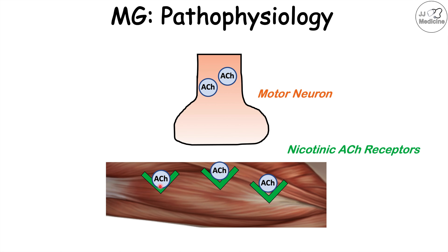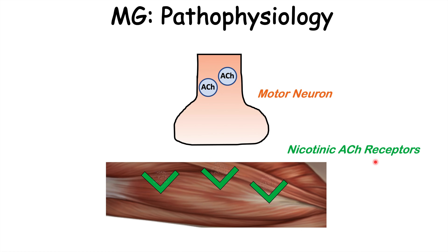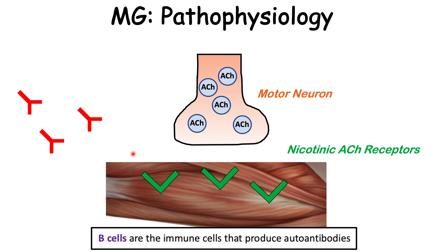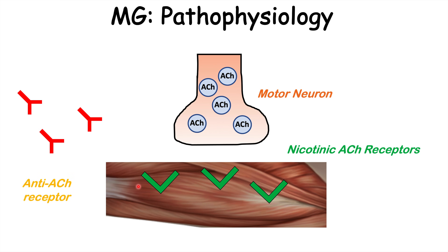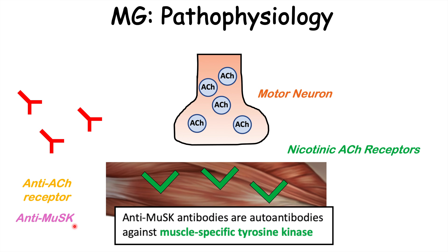The binding of acetylcholine to these nicotinic acetylcholine receptors leads to contraction of that muscle. However, in the case of myasthenia gravis, antibodies are formed against particular parts of this apparatus. One of these autoantibodies is anti-acetylcholine receptor — antibodies against the nicotinic acetylcholine receptor. Another autoantibody that can be formed is anti-muscle specific kinase.